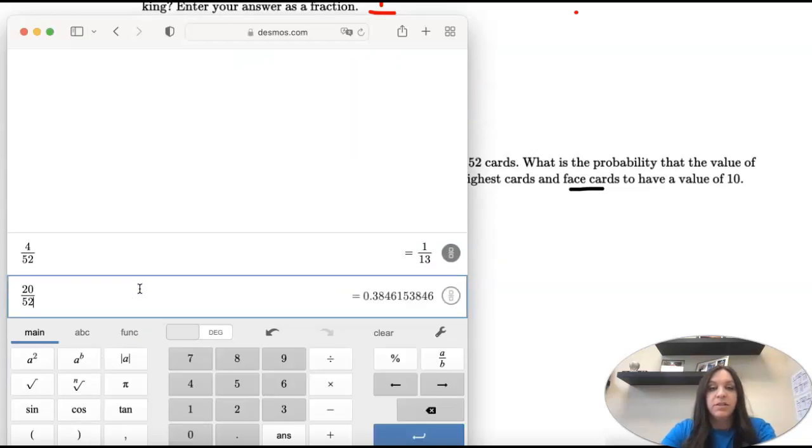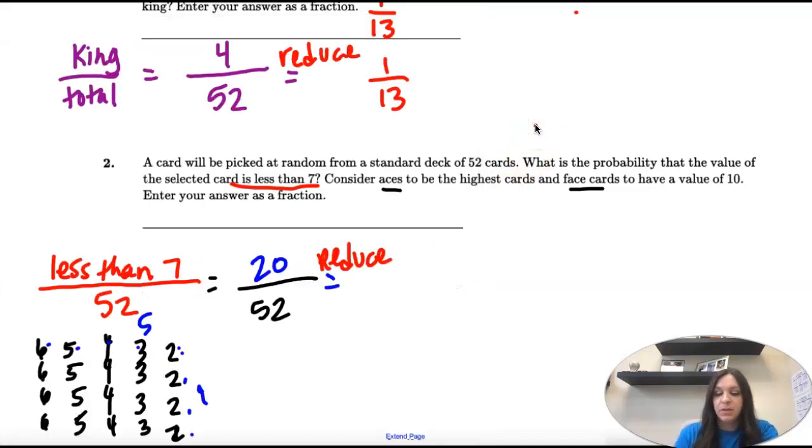Okay, now we're going to reduce. 20 over 52 reduces to 5 over 13. So what we're finding out is the probability. We have a 5 in 13 chance of pulling a card less than seven out of a deck of cards.